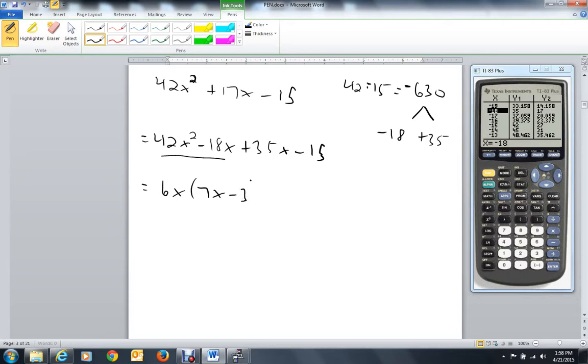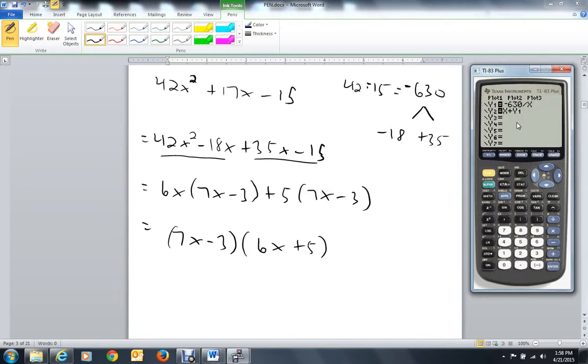When you divide out the 6x we get 7x minus 3. The 35x minus 15 looks like they have a positive 5 in common. When you divide out the 5 you get 7x minus 3 also, which is better because the parentheses has to be the same. That's one of the factors. When you divide it out, 6x plus 5 remains.